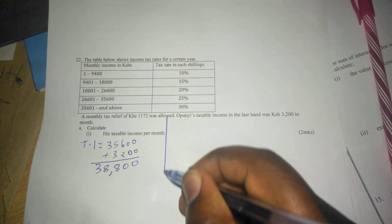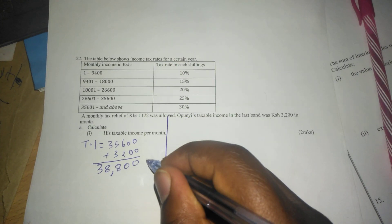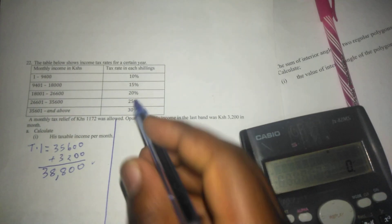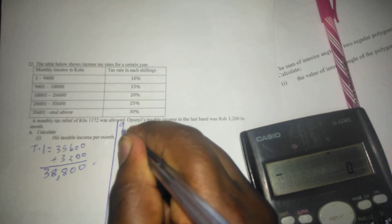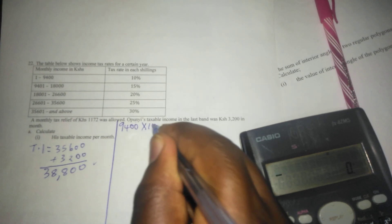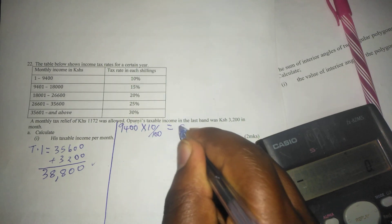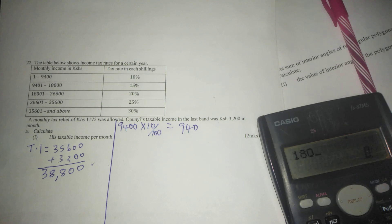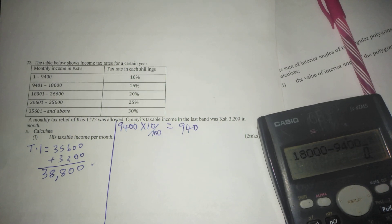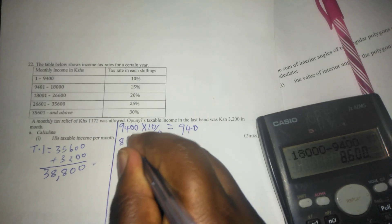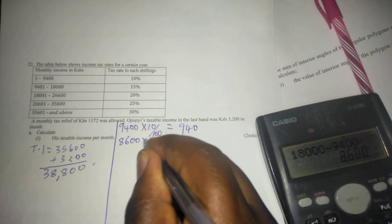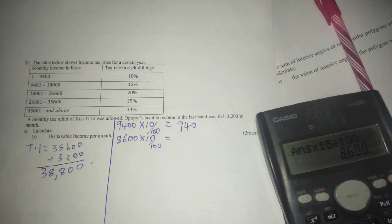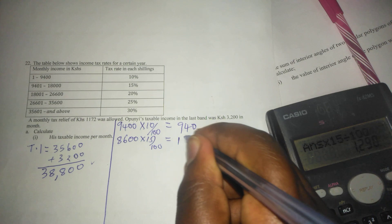For us to get the amount of tax, let me start by using this space. We have taxable income, now we're going to tax it until the last bracket. In the first bracket we will tax an amount of 9,400 at 10 percent, which means 940. Then in the next bracket we will be taxing 18,000 minus 9,400, which is 8,600 at the rate of 15 percent. This gives us 1,290.